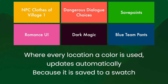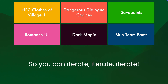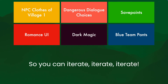Just like other assets. Because in that case, you can iterate and iterate and iterate to your heart's content. The romance UI should be a different color? Great, we'll change it. Save points are hard to find in the world? Let's change those colors. Or the NPC clothes of Village 1 need to be slightly different now because they're too similar to save points — great, we'll change that.